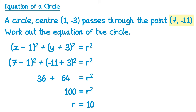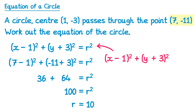Now that we've found the radius, we can rewrite the equation. So it's (x minus 1) all squared plus (y plus 3) all squared equals the radius squared — the radius is 10, so 10 squared is 100, and that's the answer.